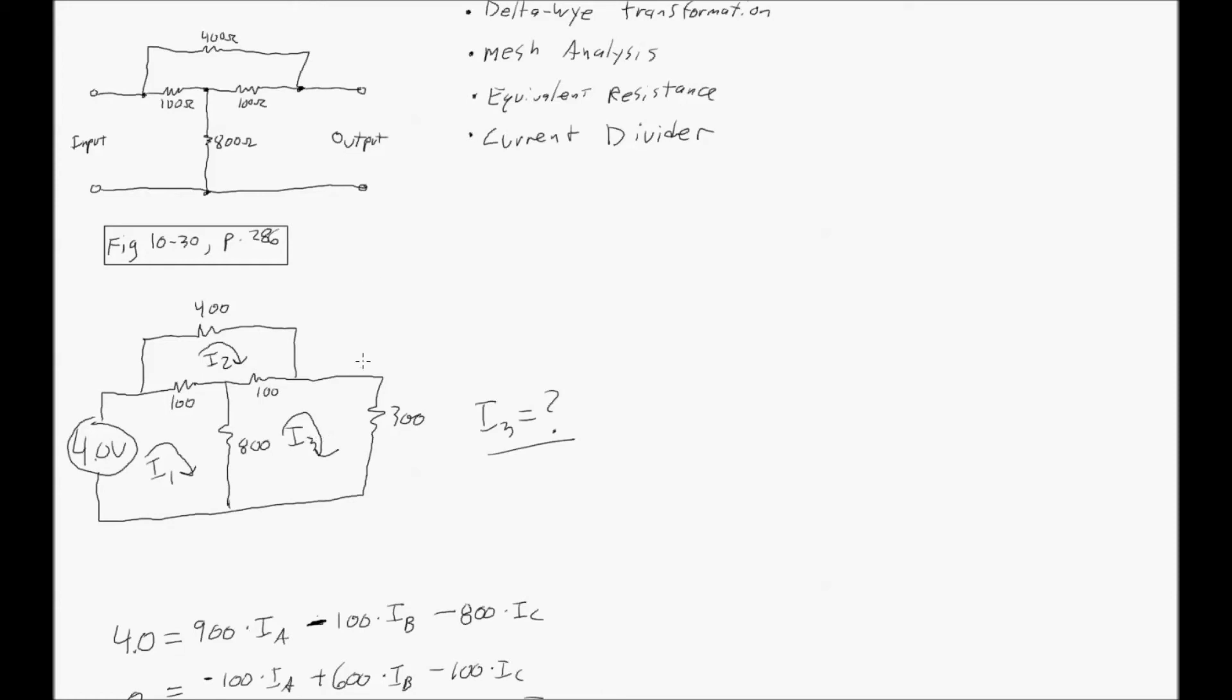That's the question. What's the current through the 300 ohm resistor here? And if we solve the I3 loop, that is the answer, the current through the 300 ohm resistor.